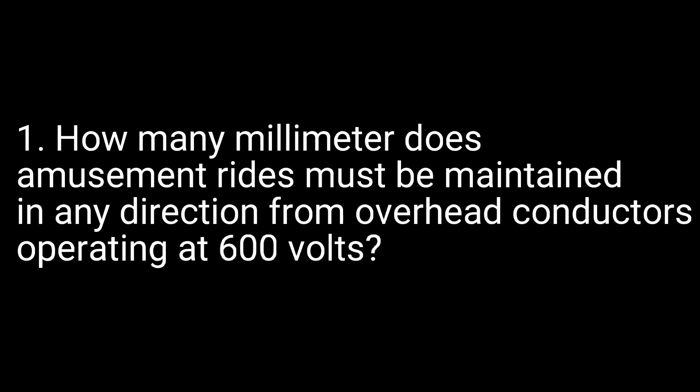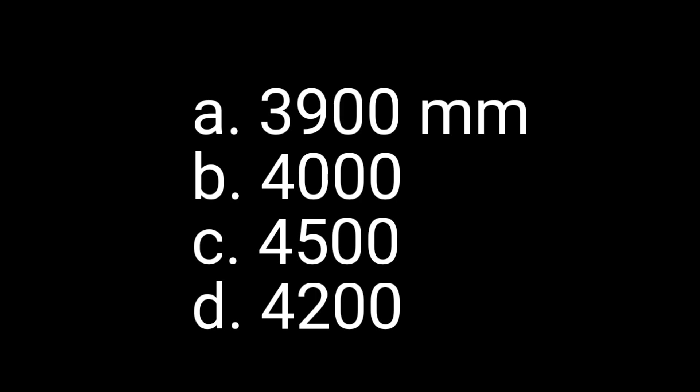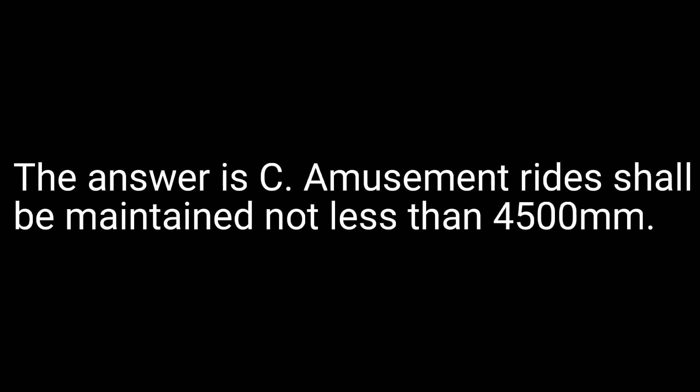Question 1. How many millimeters must amusement rides be maintained, in any direction from overhead conductors operating at 600 volts? A. 3,900 millimeters. B. 4,000. C. 4,500. D. 4,200. The answer is C.